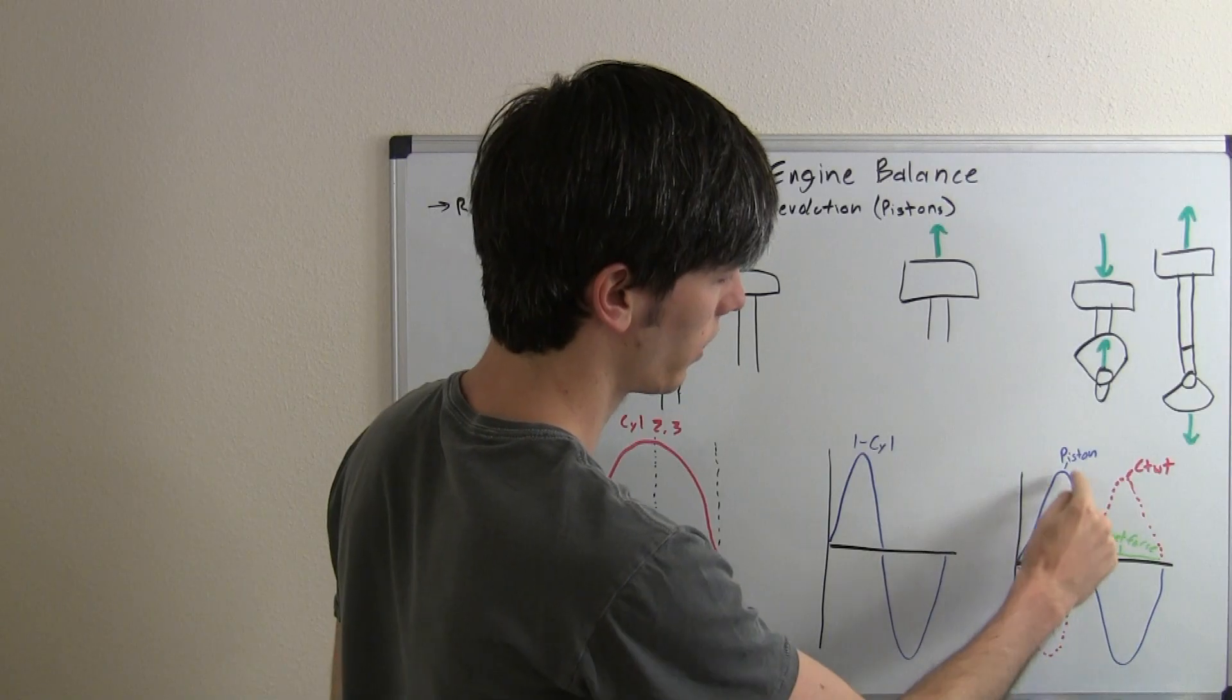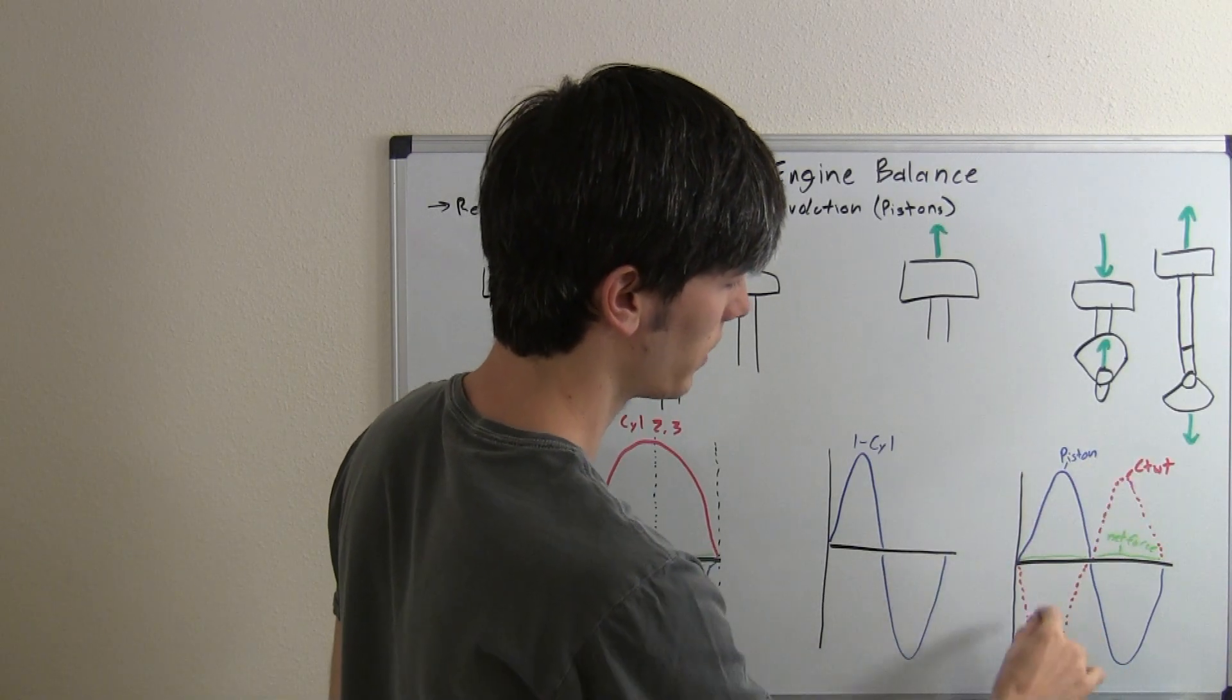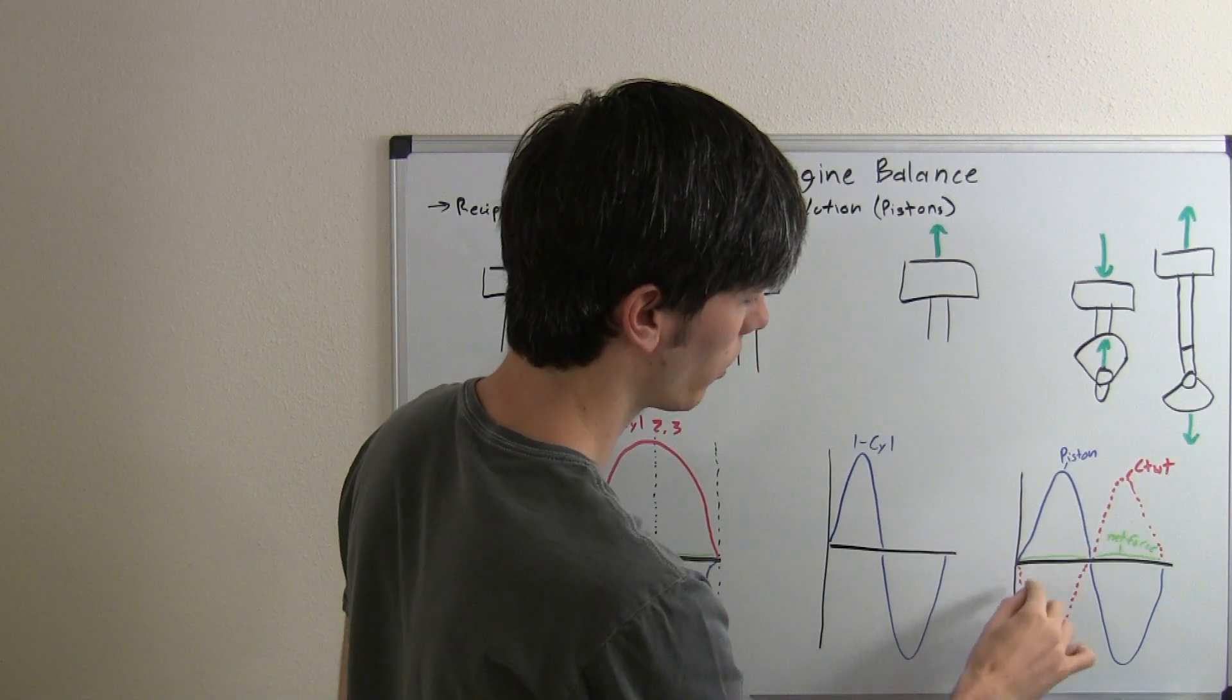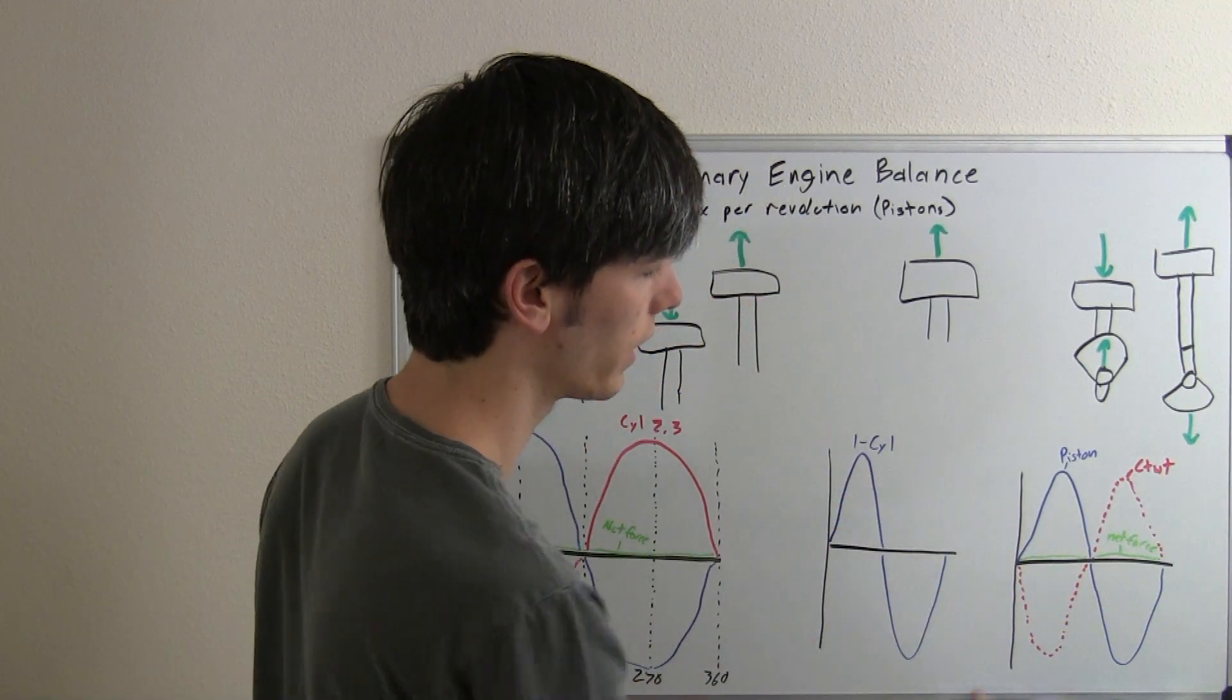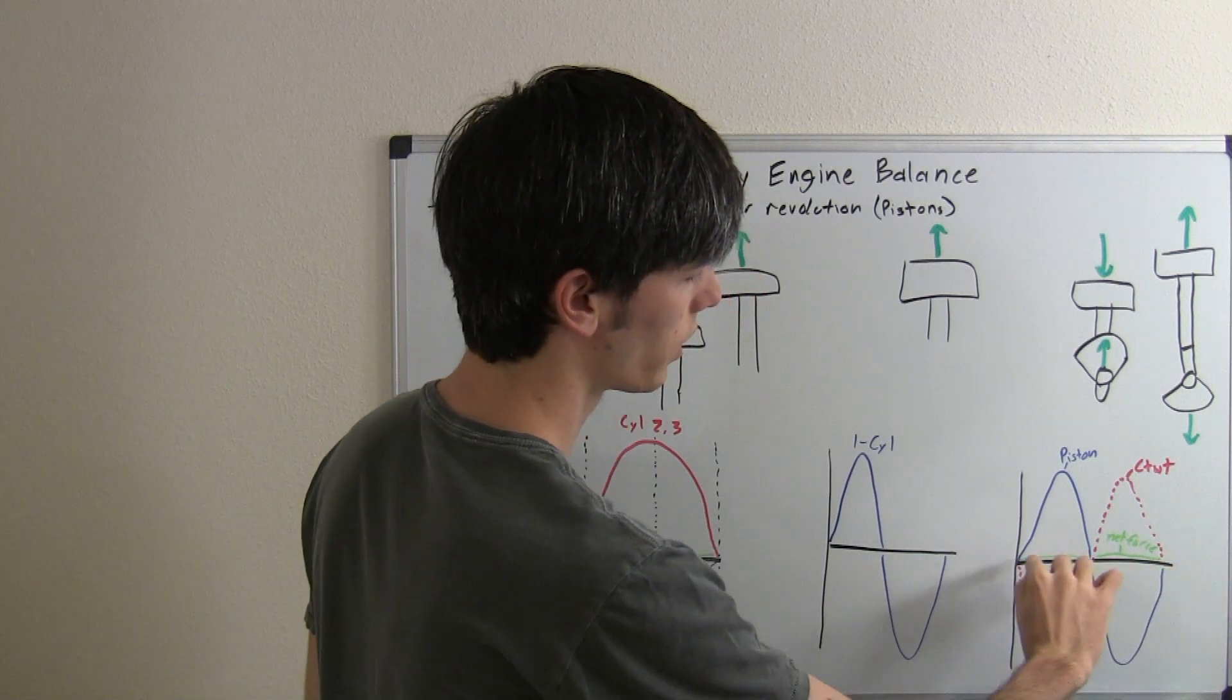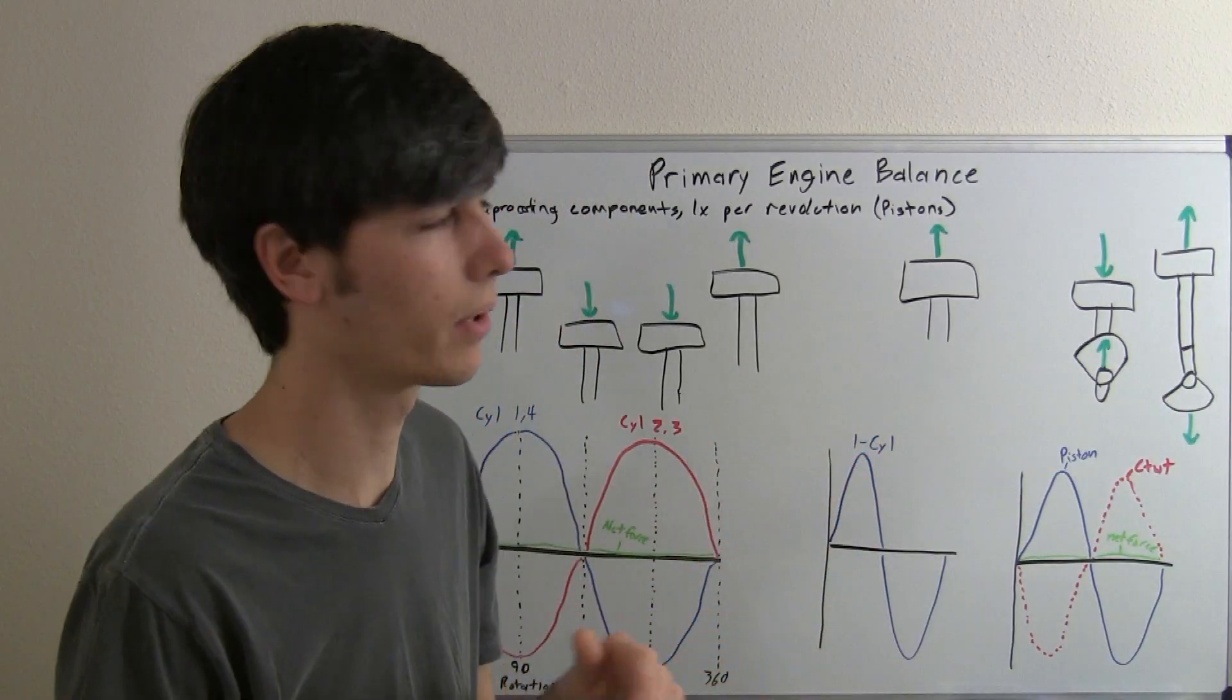Here's going to be your piston right here and that's the force, the inertia from that piston moving up and down. And then here you have your counterweight and you can see it does the exact opposite in the vertical plane. Your net force is going to be neutral, zero, and so you're going to have an engine that's not vibrating.